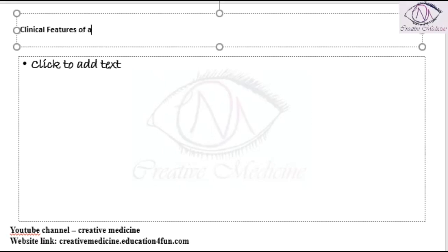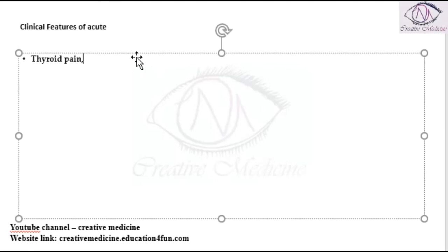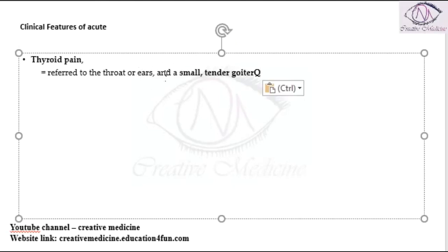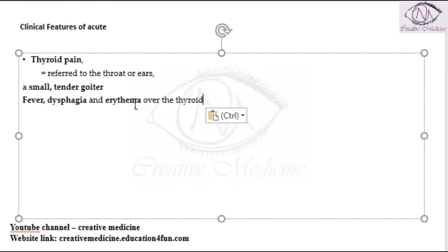The clinical features of acute suppurative thyroiditis: because it is an acute condition, thyroid pain is seen in most cases, which is referred to the ear and throat. A small tender goiter is also seen. The patient will present with fever, dysphagia, and erythema over the thyroid.